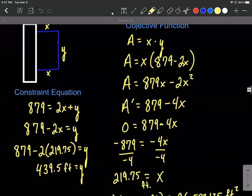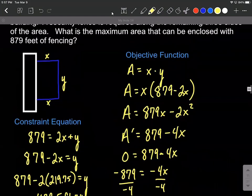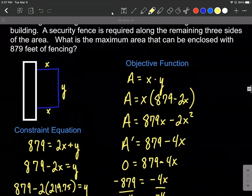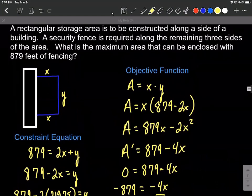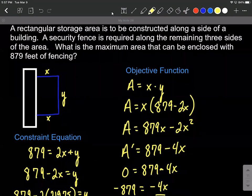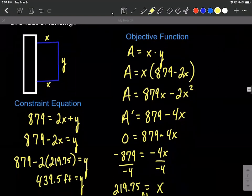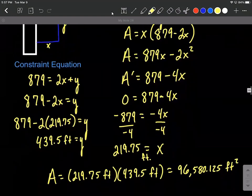Whenever you're getting going on these, draw yourself a picture, create a constraint equation using a number given to you within the original word problem. Figure out what you're trying to maximize or minimize - that's your objective function. Rewrite that in terms of only one variable by solving down the constraint equation for one letter and substituting it into your objective function, take the derivative, set it equal to zero, solve down.